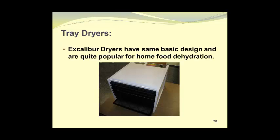Excalibur dryers are quite popular for home food dehydration and have the same basic design as most other dryers. In this case the dryer has nine square trays which slide into the cabinet. The air is heated via heating elements in the back and a fan directs the air flow across the trays and out the door arrangement at the front of the dryer. The door has been removed so you can see the nine trays inside the dryer.